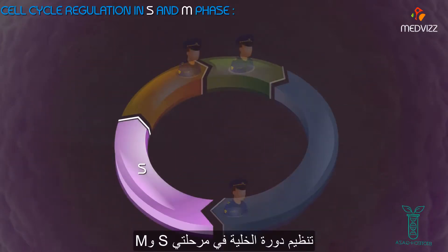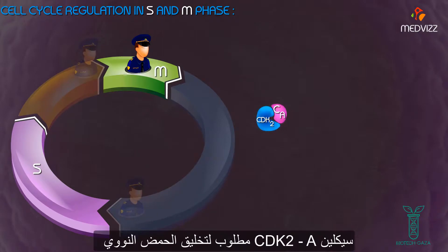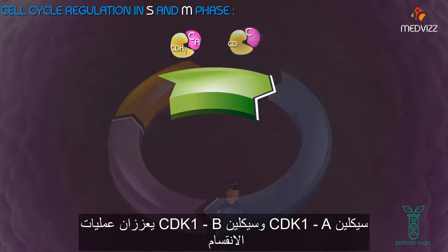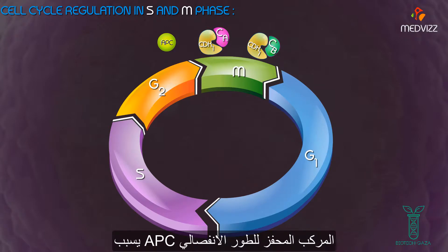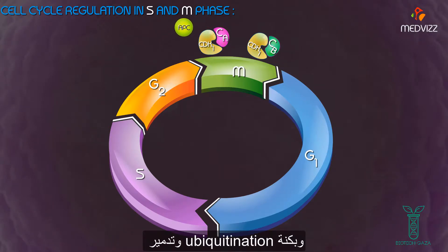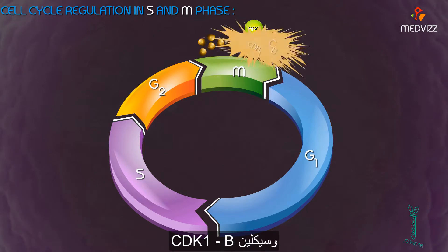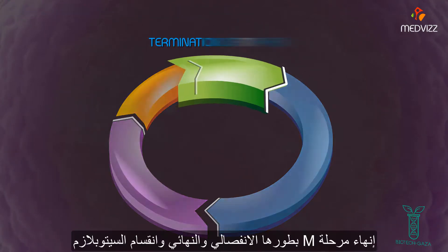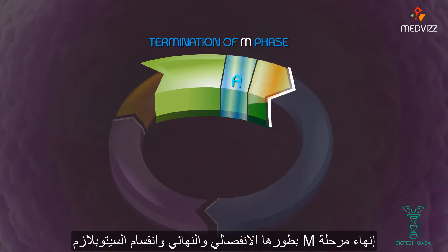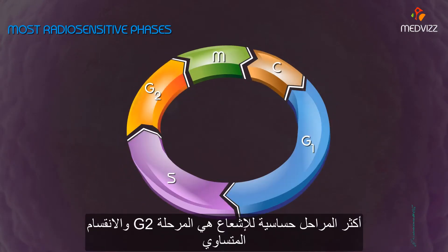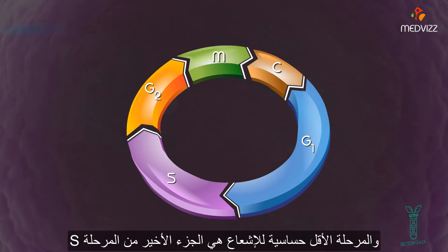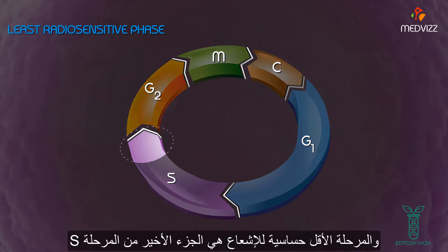Cell cycle regulation in S and M phase. Cyclin-A CDK2 is required for DNA synthesis. Cyclin-A CDK1 and cyclin-B CDK1 promote the events of mitosis. Towards the end of mitosis, the anaphase promoting complex causes ubiquitination and destruction of cyclin-A CDK1 and cyclin-B CDK1, leading to termination of M phase with anaphase, telophase, and cytokinesis. The most radiosensitive phases are the G2 phase and mitosis. The least radiosensitive phase is the latter part of the S phase.